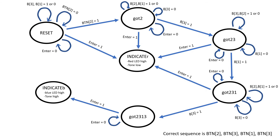In the indicate blue state, the blue LED is high and the tone is high. The low tone is 110 Hz and the high tone is 392 Hz, so you can definitely tell the difference between the two. The LEDs are a visual indicator and the tones are an auditory one.